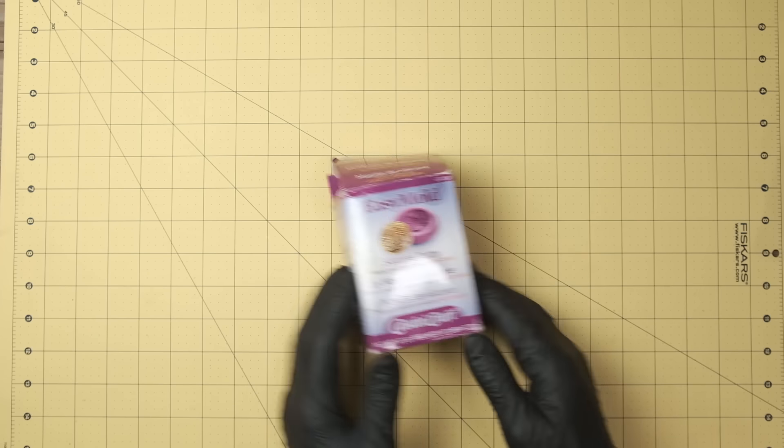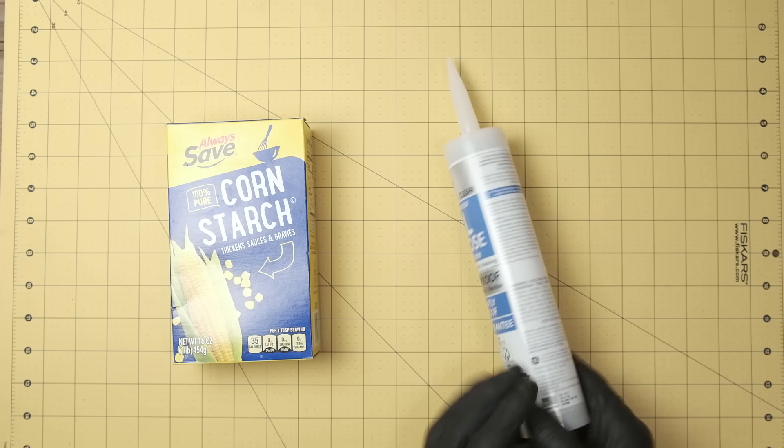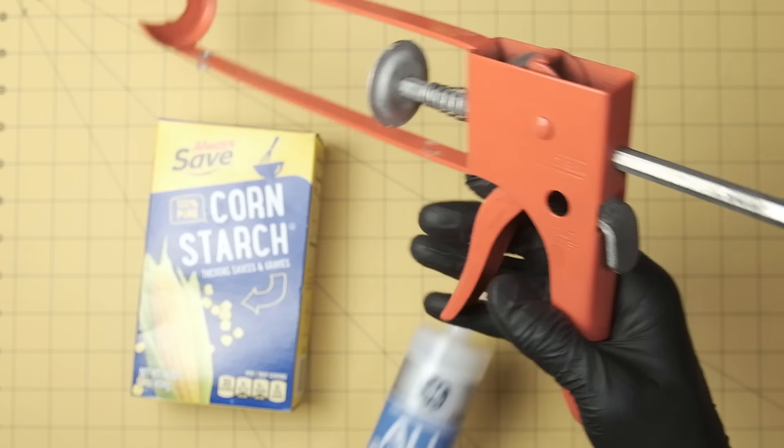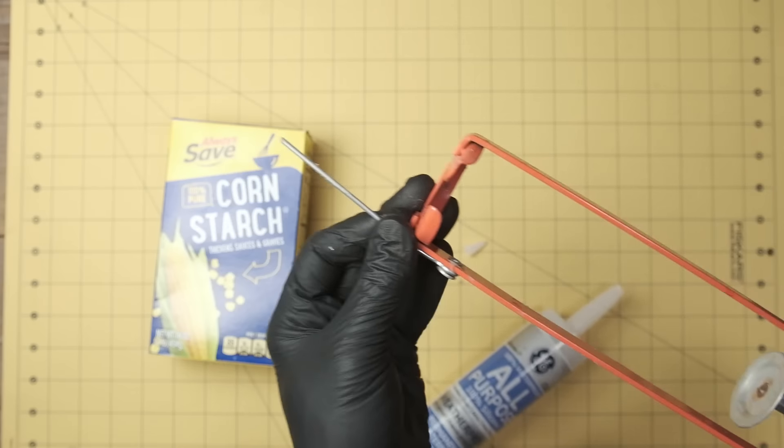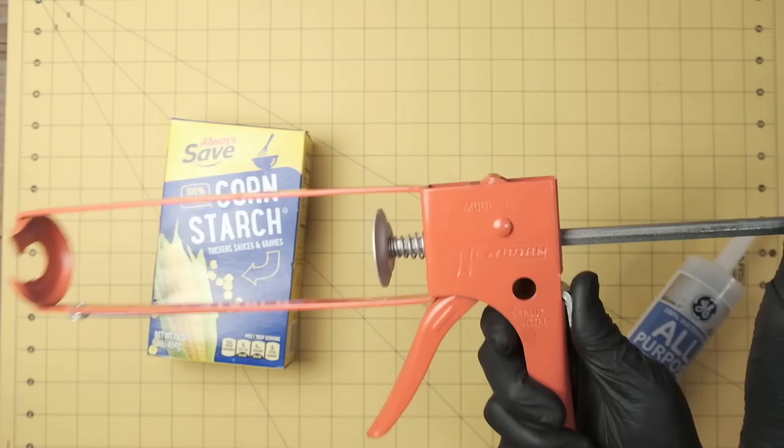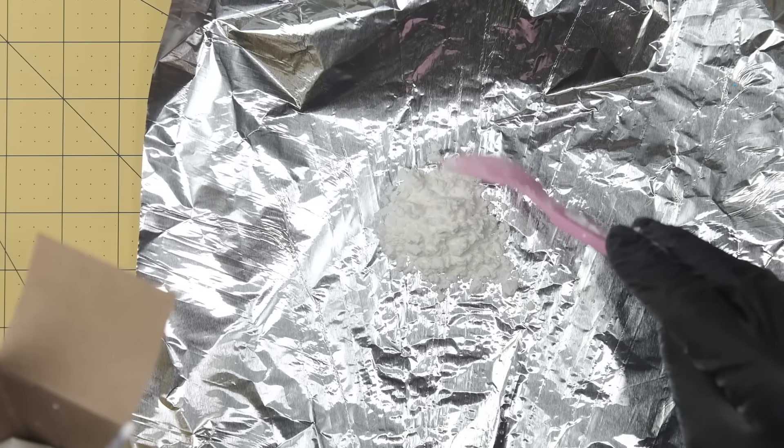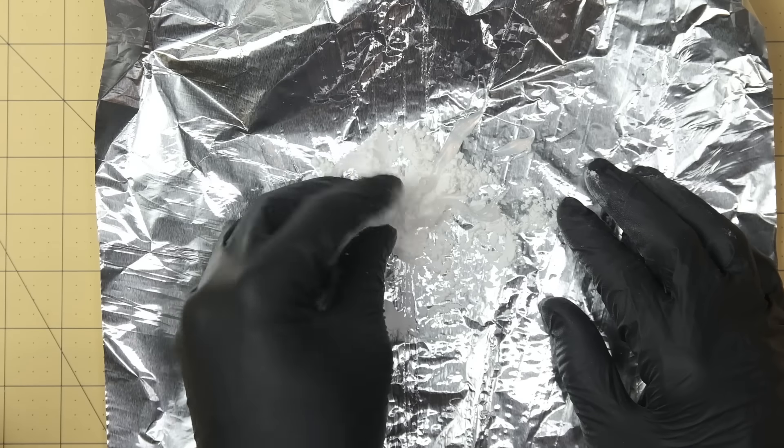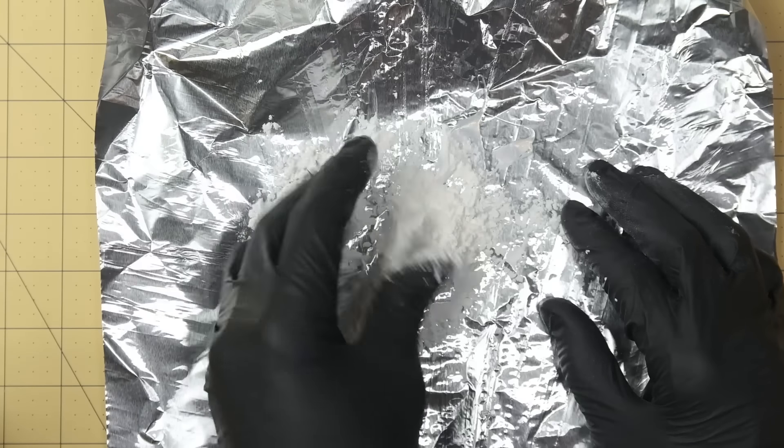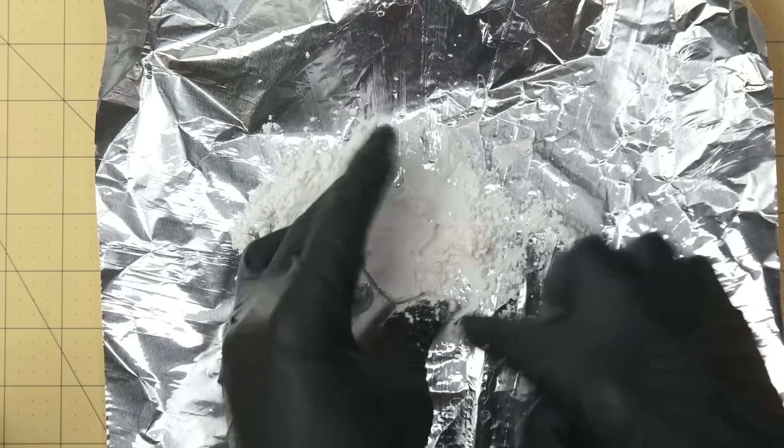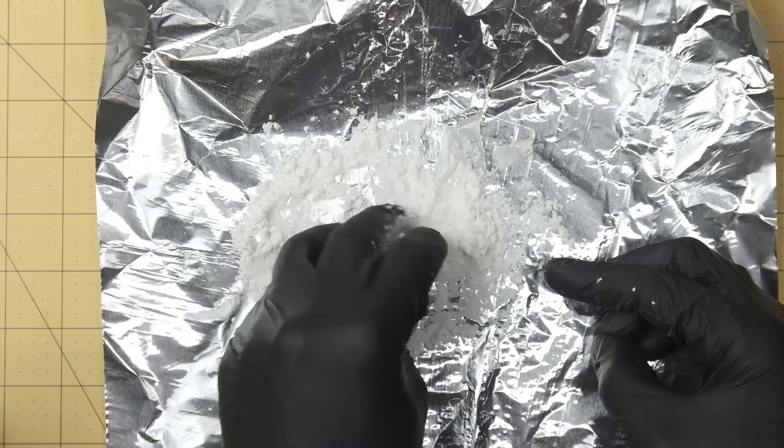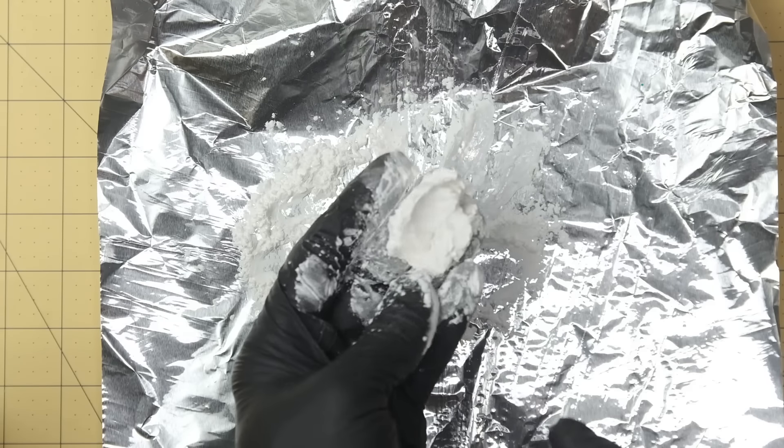You might could try to take some cornstarch and some regular old silicone that you get from your hardware store and just go ahead and do this. This way is going to be a little bit messy. Just roll it, roll it, roll it, and make sure that you get out of the sticky. You want that to be exposed to the cornstarch.